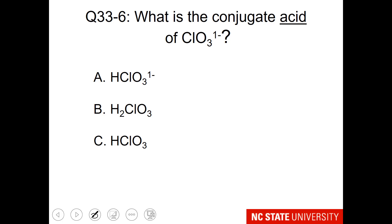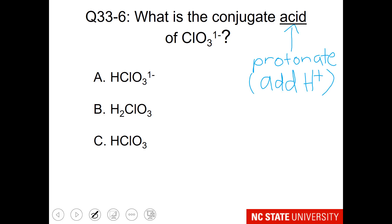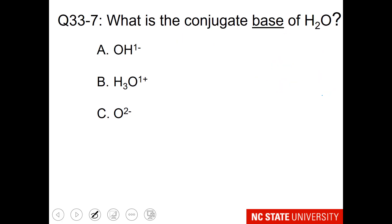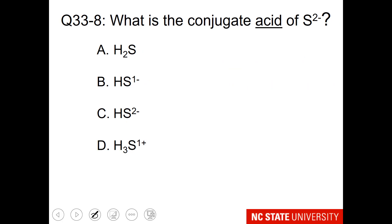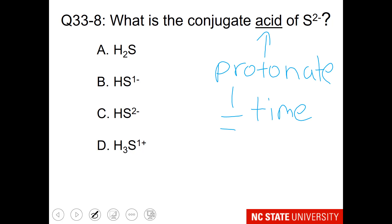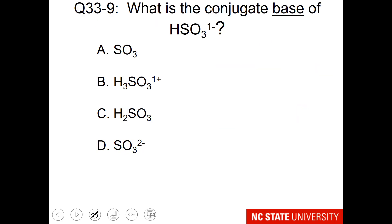Here is a question for you: what is the conjugate acid of the chlorate ion? Whenever you want the conjugate acid, you want to protonate, which means add an H⁺. How about the conjugate base of water? For this, you need to deprotonate, which means removing an H⁺. What is the conjugate acid of sulfide? We need to protonate it, and only do that one time. And finally, what is the conjugate base of HSO₃⁻? You need to deprotonate.